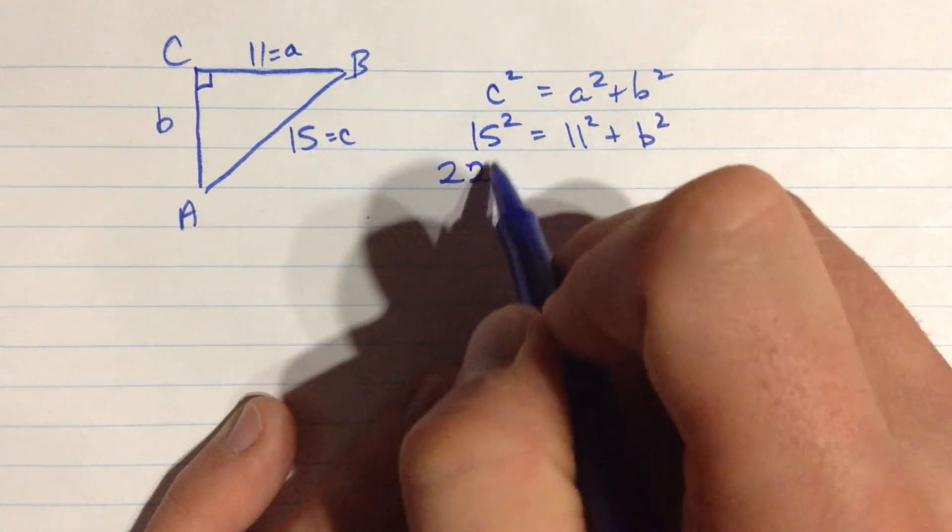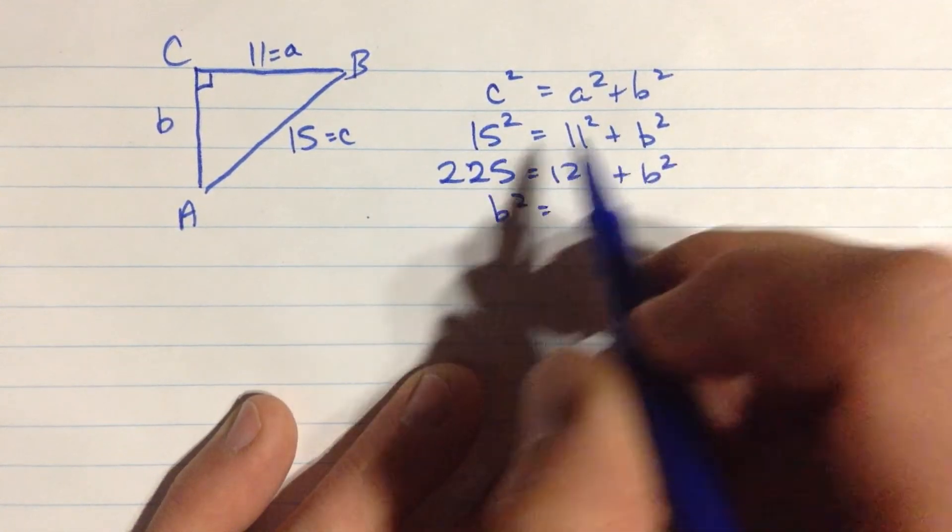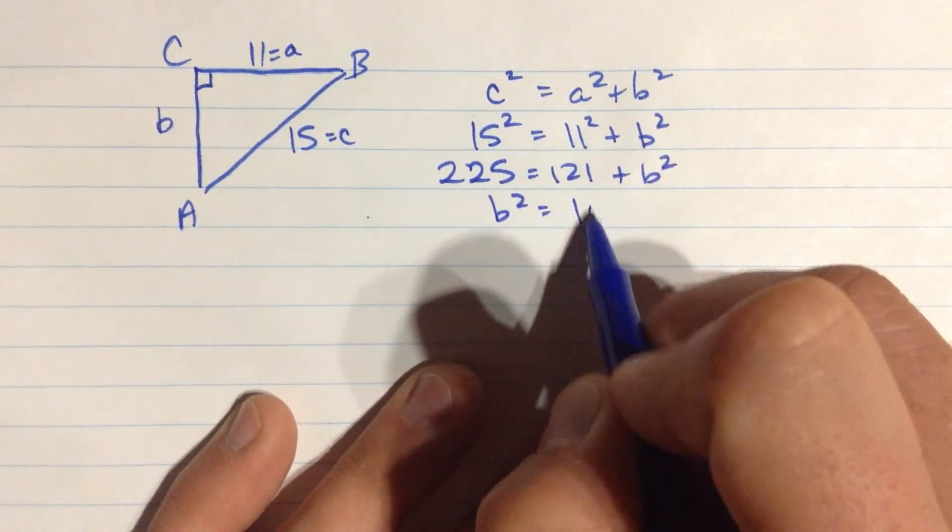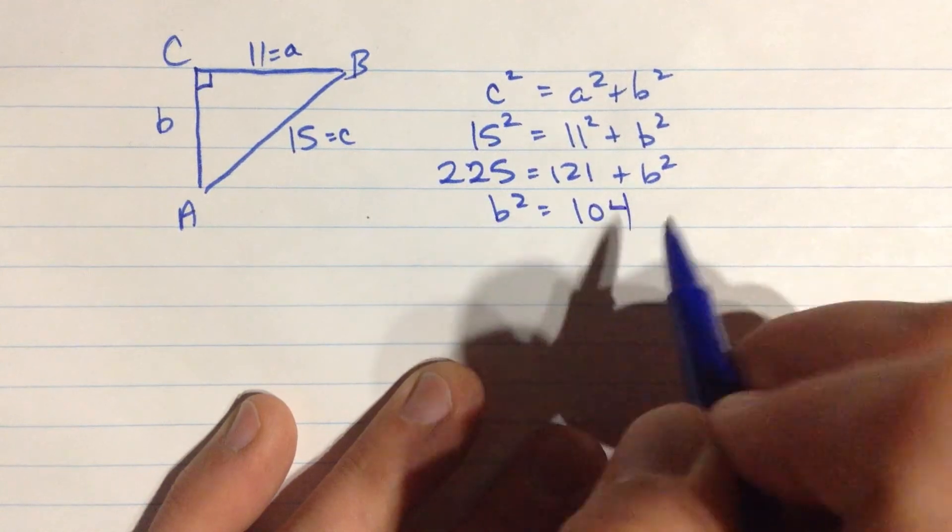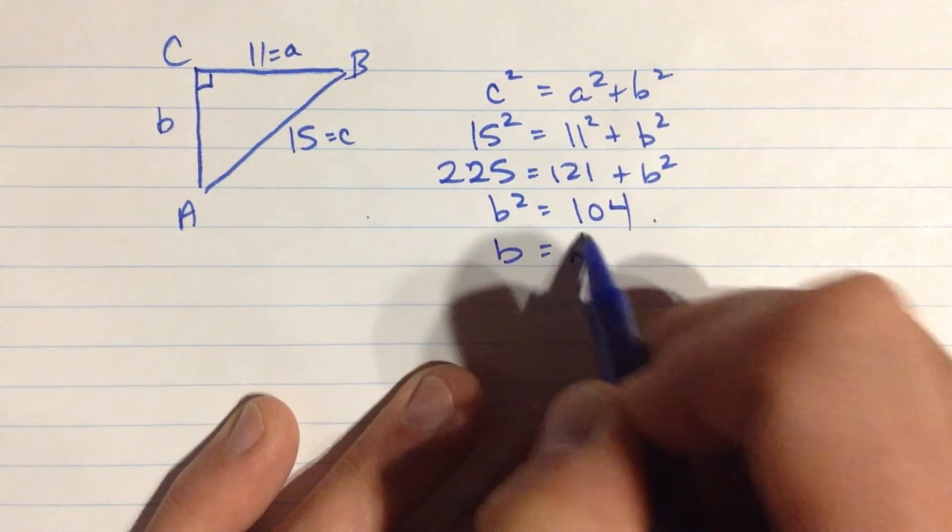That means 225 is 121 plus b squared. Rearranging that, I'm going to get, b squared is 104. Yes, okay, and then b is the square root of 104.